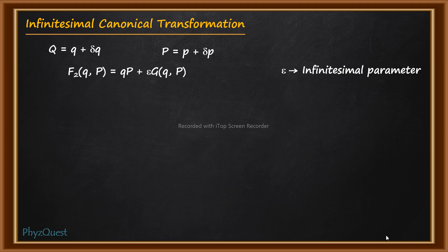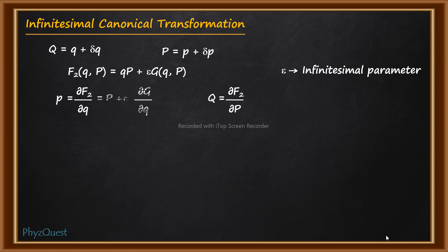Using the equations for the generating function F2 — that is, p = ∂F2/∂q and Q = ∂F2/∂P — and applying them to the expression F2 = qP + ε·G, we get: p = P + ε·(∂G/∂q) and Q = q + ε·(∂G/∂P).